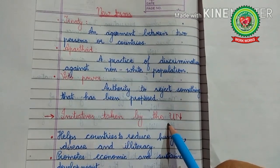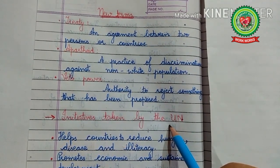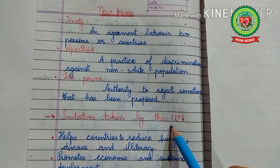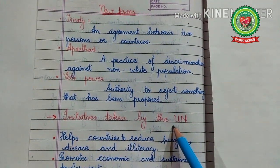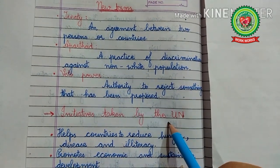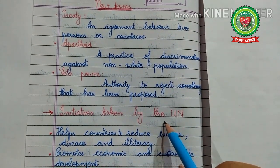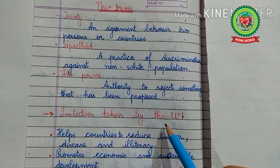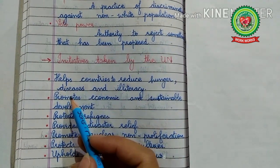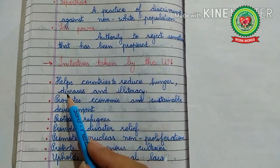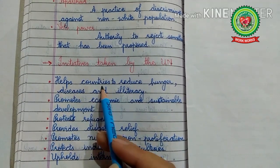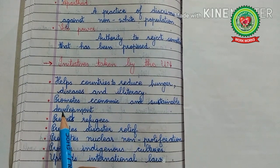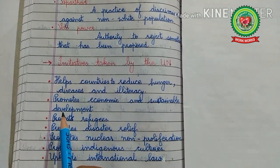The United Nations has many achievements to its credit. For one thing, it has been able to prevent the outbreak of the Third World War, and it has been largely helpful in maintaining world peace. The UN, with the help of its agencies, has made a lot of efforts for the welfare of the people of the world. The first initiative: the UN helps countries to reduce hunger, diseases, and illiteracy.